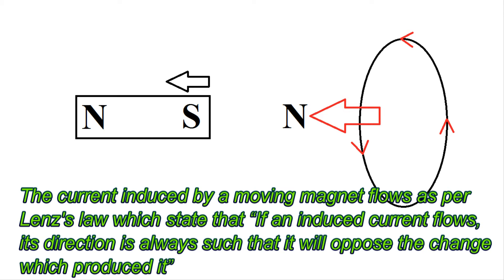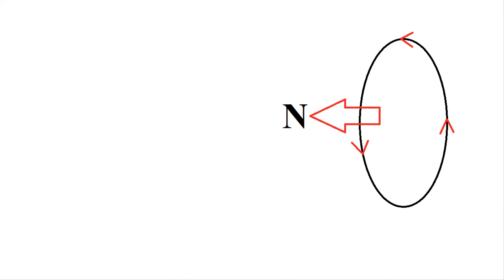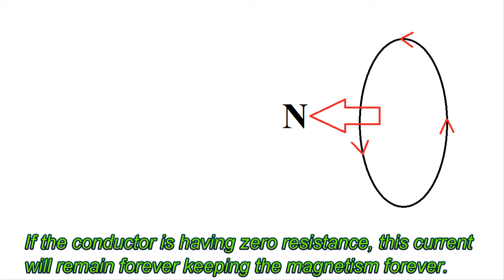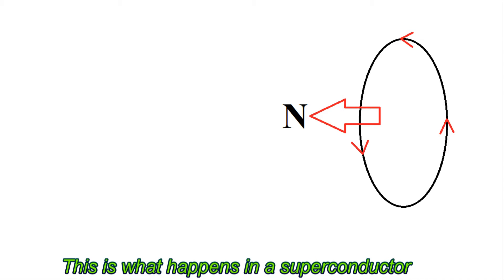The current induced by a moving magnet flows as per Lenz's law, which states that if an induced current flows, its direction is always such that it will oppose the change which produced it. If the conductor has zero resistance, this current will remain forever, keeping the magnetism forever. This is what happens in a superconductor.